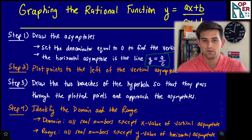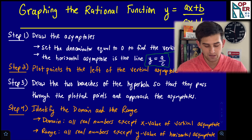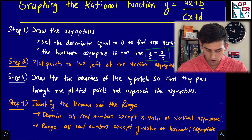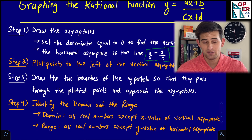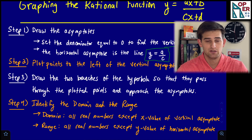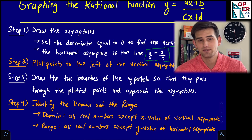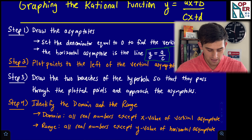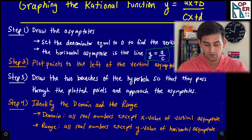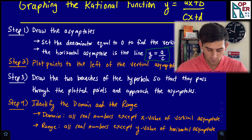Once we've drawn the graph, we're good. Then we evaluate the graph and identify the domain and the range. For the domain, it's all real numbers except the x value of our vertical asymptote. For the range, it's the same idea — all real numbers except the y value of the horizontal asymptote.